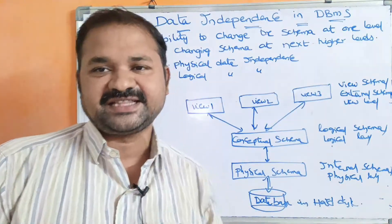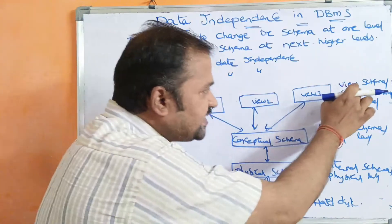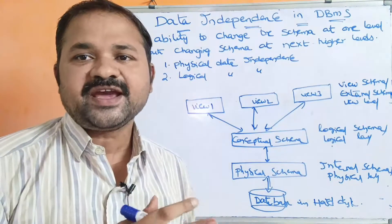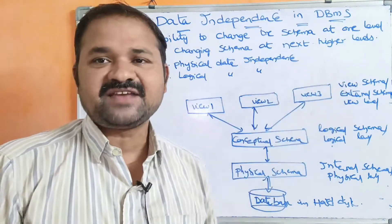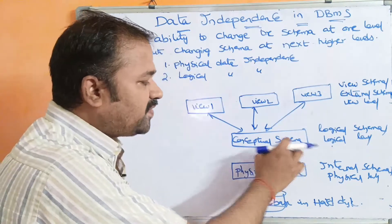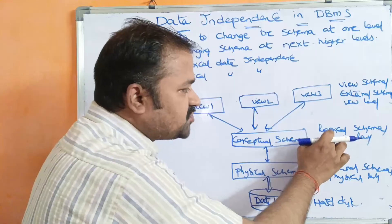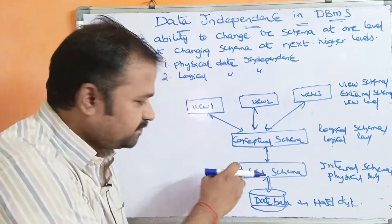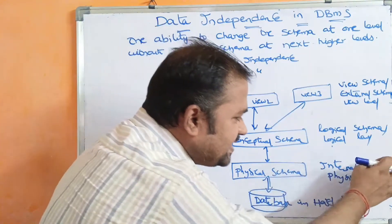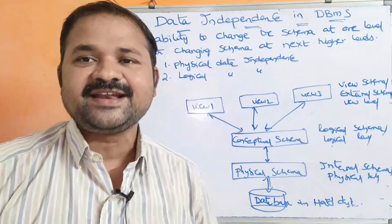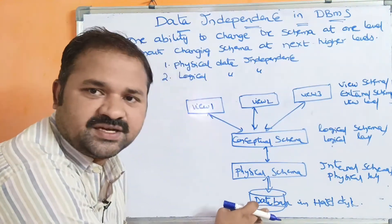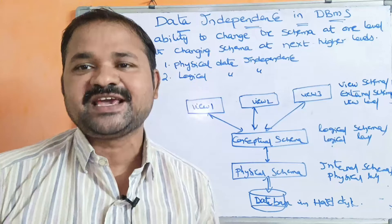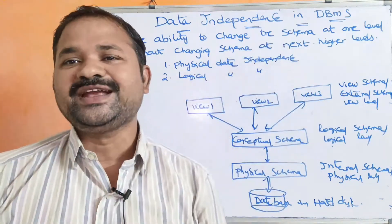Mainly, we have three schemas. The first one is view schema, also called external schema or external level — this is the highest level. In the middle, we have conceptual schema, also called logical schema or logical level. At the lowest level, we have physical schema, also called internal schema or internal level. The database is stored in the hard disk.